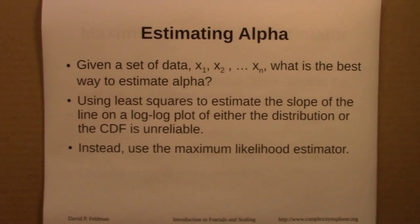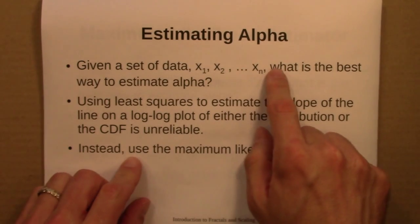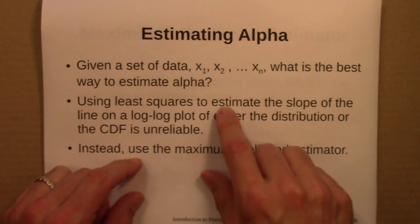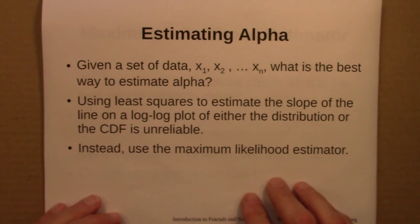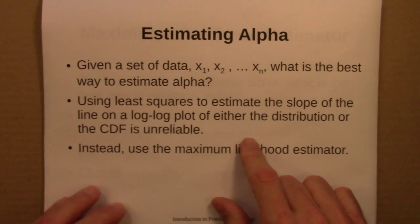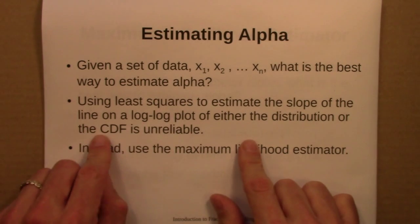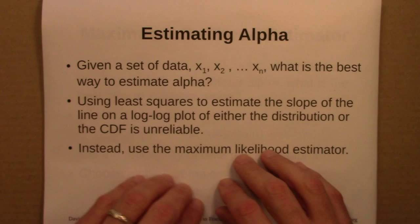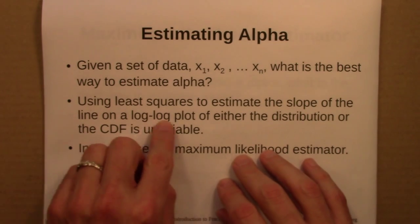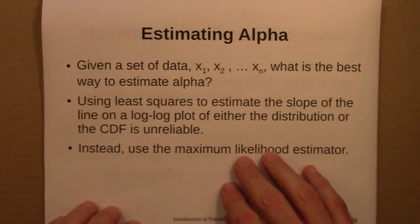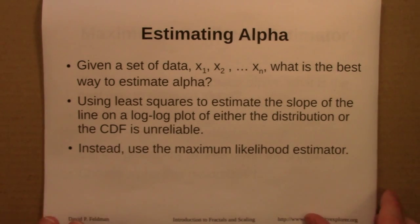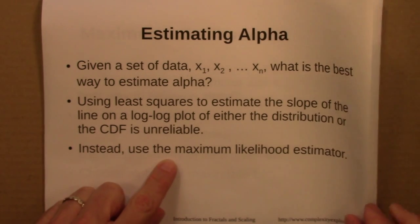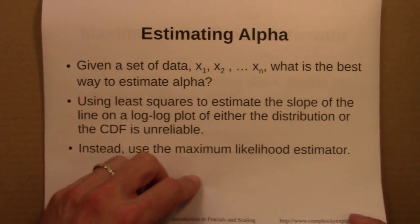Next, we talked about how to estimate alpha. Given data believed to follow a power law, making a log-log plot and finding the slope using a least squares algorithm turns out to be unreliable — it can give very wrong answers. Instead, we are led to the maximum likelihood estimator.